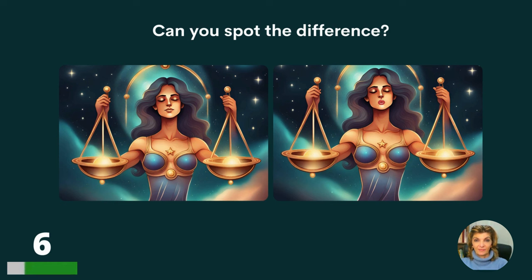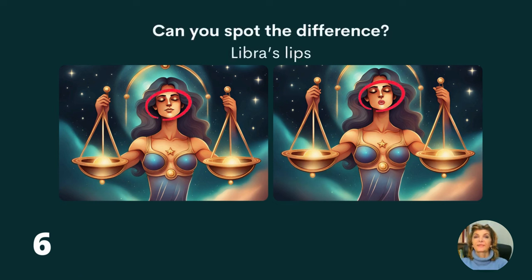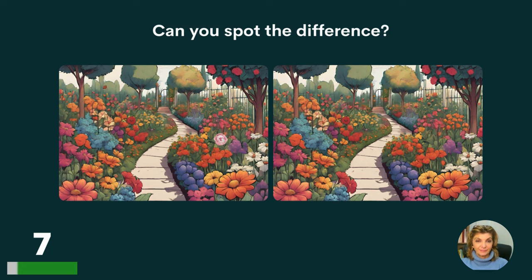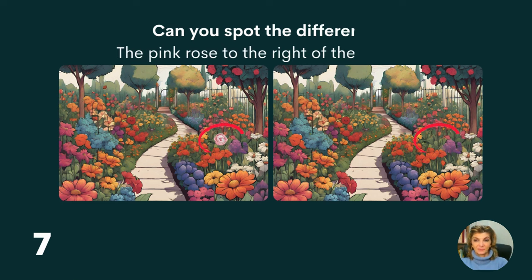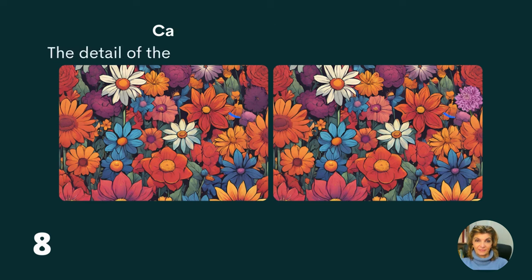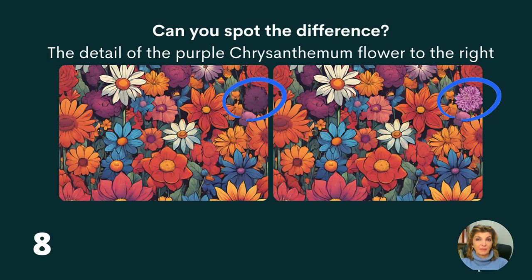Question five — a friend came to join here; it's the number of people. Question six, we have Libra's lips; they are in different position. Question seven, the pink rose to the right of the footpath. Question eight.